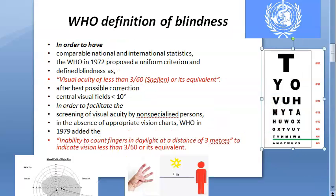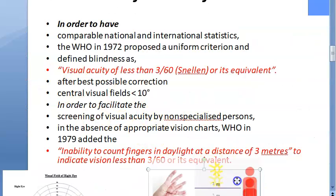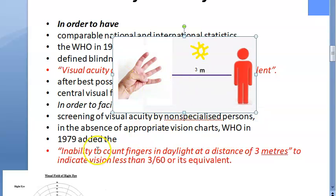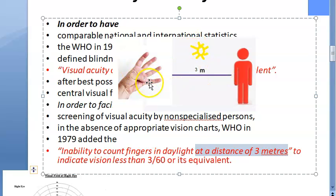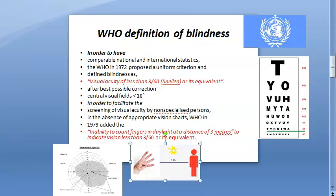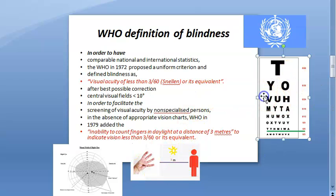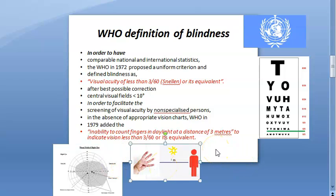If a Snellen's chart is not available, there is another practical definition that can help: the inability to count fingers in daylight at a distance of 3 meters. So if a person is standing 3 meters away from you in sunlight and cannot count your fingers, then that person is blind. To summarize, the WHO definition covers: less than 3 by 60 Snellen's, or less than 10 degrees visual field, or inability to count fingers at 3 meters in daylight.